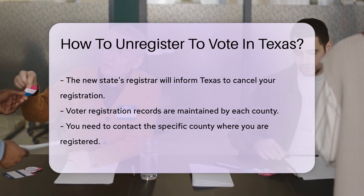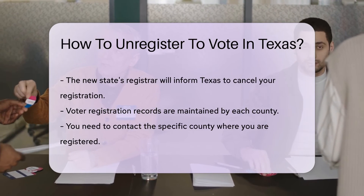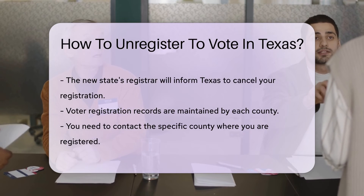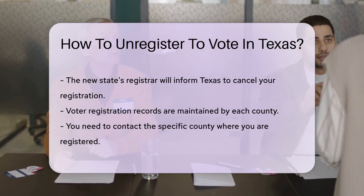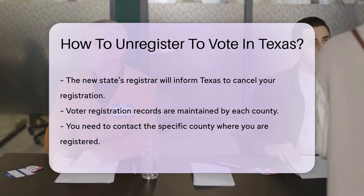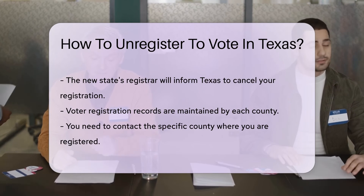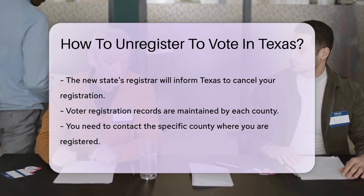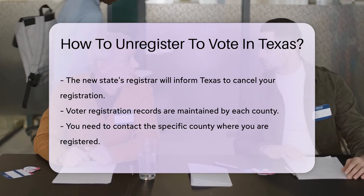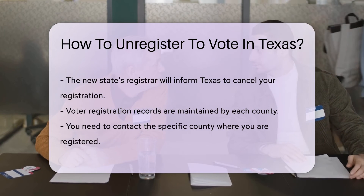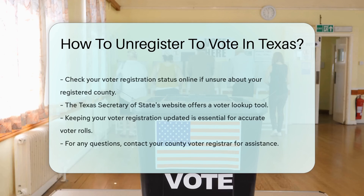It's important to note that voter registration records are maintained by each county. This means you need to contact the specific county where you are registered. If you are unsure which county you are registered in, you can check your voter registration status online. The Texas Secretary of State's website offers a voter lookup tool for this purpose.